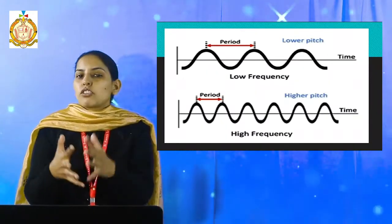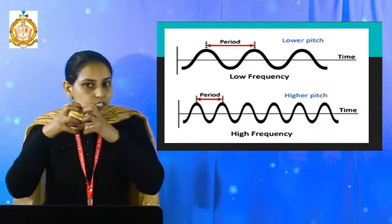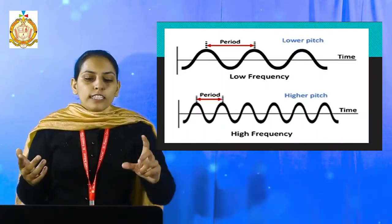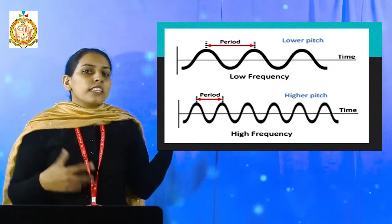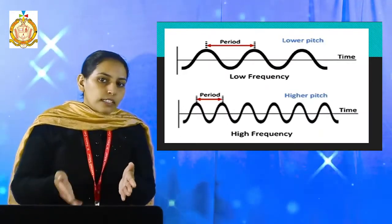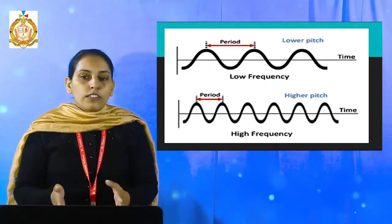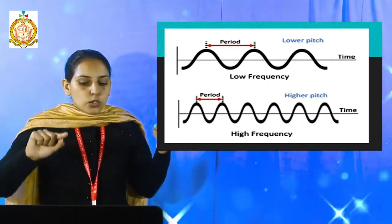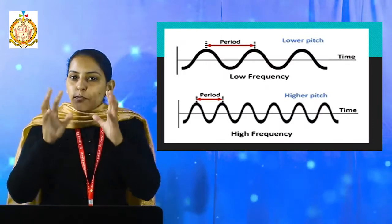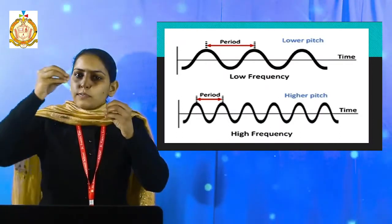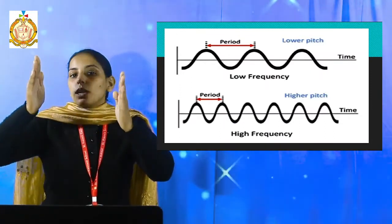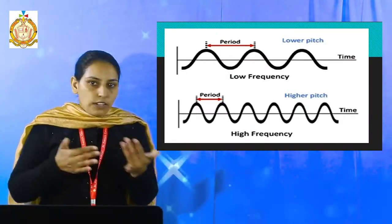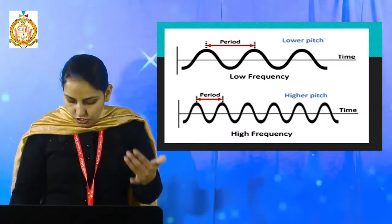Next is frequency and pitch. Frequency and pitch are related to each other. If frequency is high, then the pitch is high. If frequency is low, then the pitch is low. To distinguish which wave has high frequency and which has low frequency: if the number of waves in the same time period is more, that means frequency is high; if the number of waves is less, that means frequency is less. The pitch depends upon the frequency — if frequency is low, pitch is low; if frequency is high, pitch is also high.